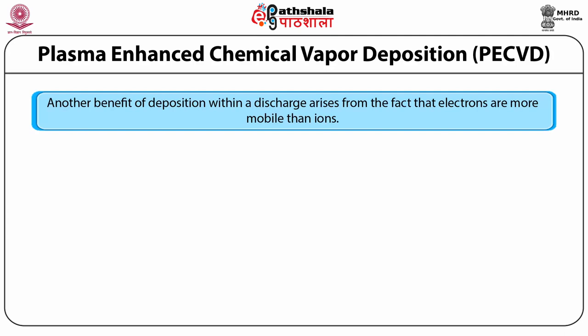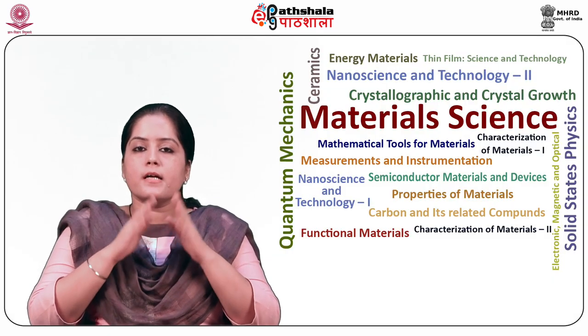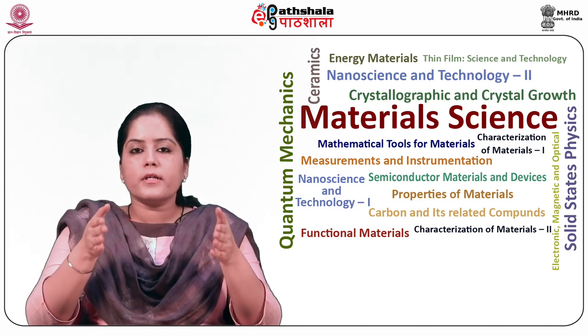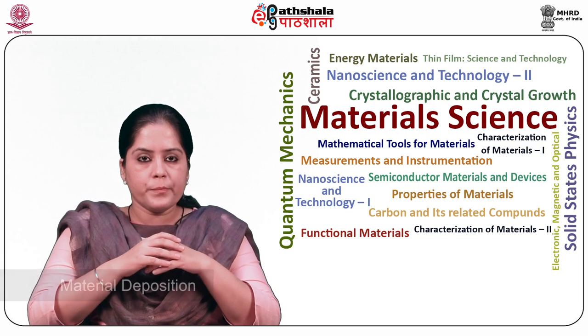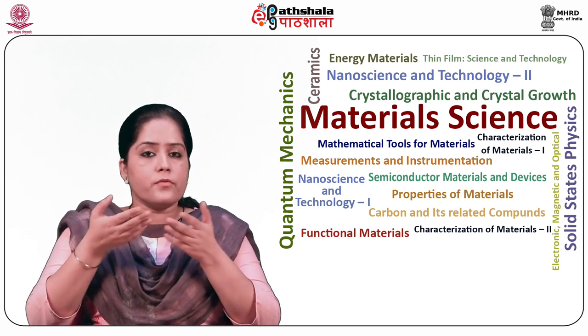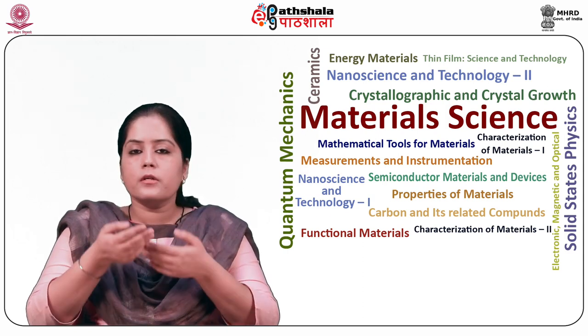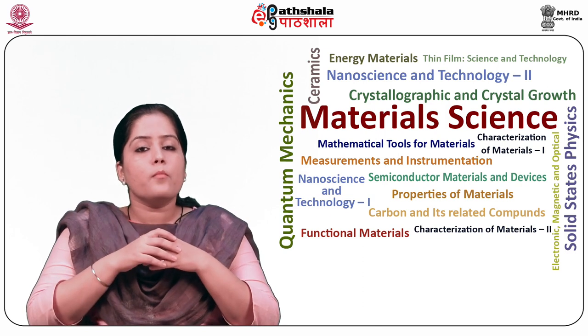Another benefit of deposition with a discharge arises from the fact that electrons are more mobile than ions. Hence, plasma becomes the most positive among the things it is in contact with. The difference in voltage between plasma and the objects in its contact generally occurs across a thin sheath region, where ionized atoms or molecules diffuse to the edge of the sheath region. PECVD has been used commercially to deposit oxides and nitrides of silicon for a wide range of applications including photonic structures, passivation, and hard masks.